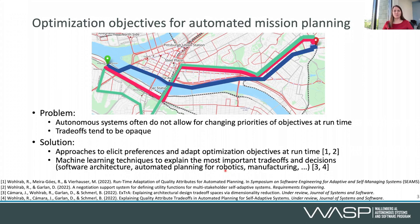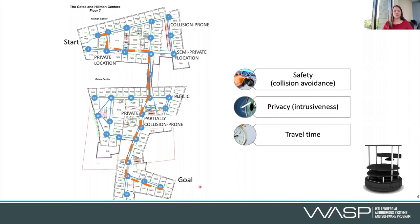In this case, we consider an example scenario of a robot that should move from a start location to a goal location indoors. The important objectives are safety — and there are some collision-prone segments in this map — privacy, where there are some private locations that we want to avoid, and travel time. Depending on the priorities that you set for these objectives, one route would be chosen or another. Here we can see an orange route, which is pretty short, and a black route, which is slightly longer. Depending on what you think is important — safety, privacy, travel time, or all of them — one route might be chosen over another.